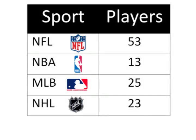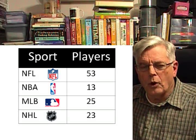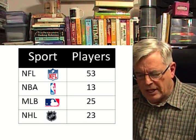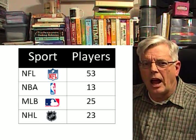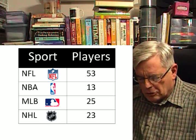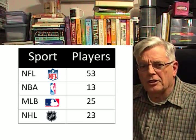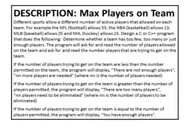For several professional sports programs such as the NFL, you can have 53 people on the active roster. For NBA basketball you can only have 13. For Major League Baseball you get 25, and for hockey up to 23.